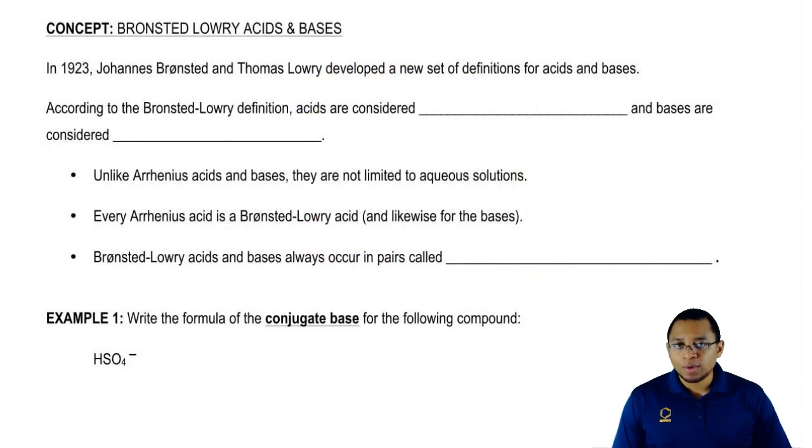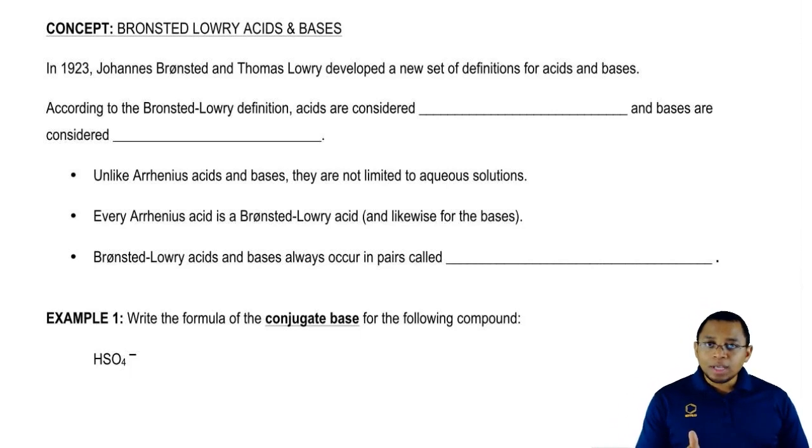Here we're going to say it was in 1923 when Bronsted and Lowry developed a new definition for acids and bases. Arrhenius devised Arrhenius acids and bases near the end of the 1800s and it was in the new century, 1923, where these two guys helped to make that definition a little bit better.